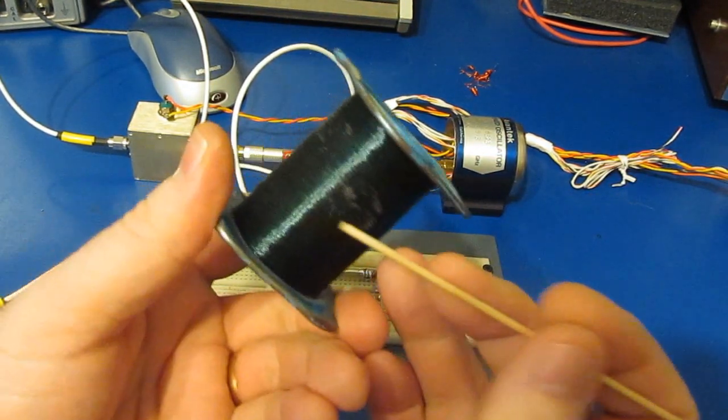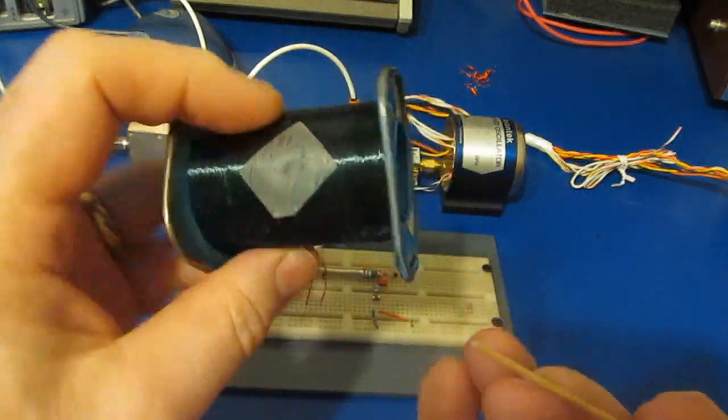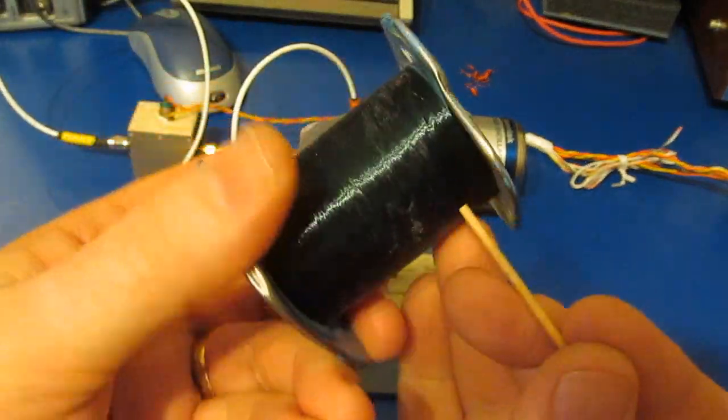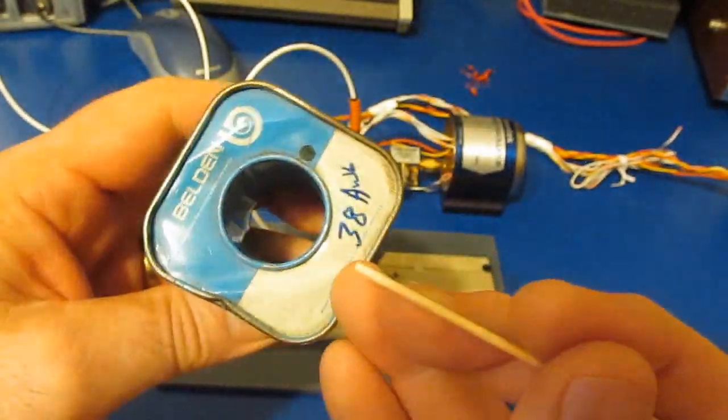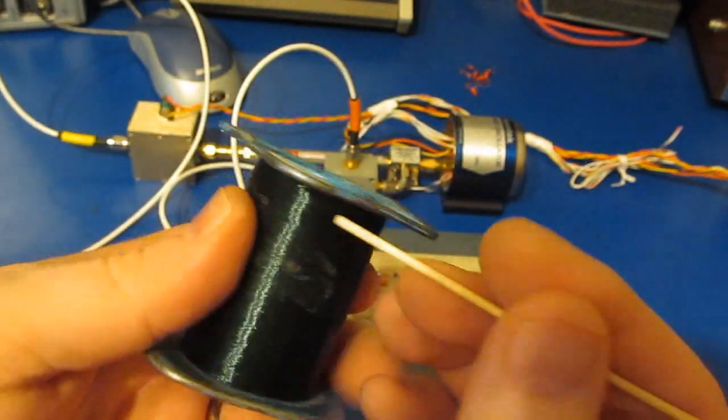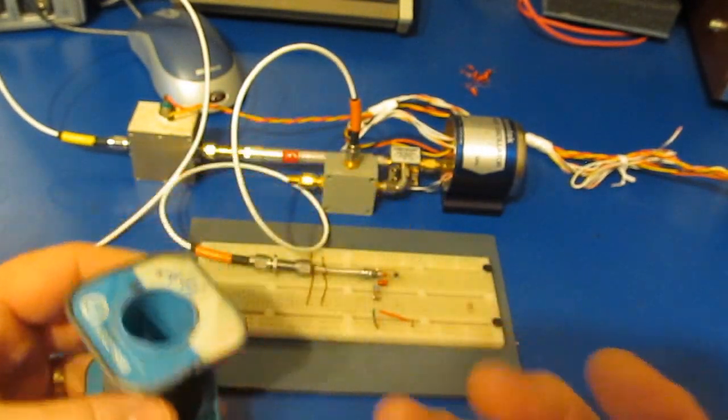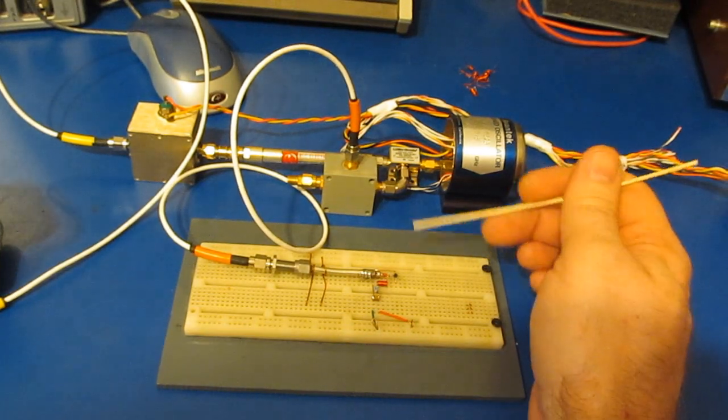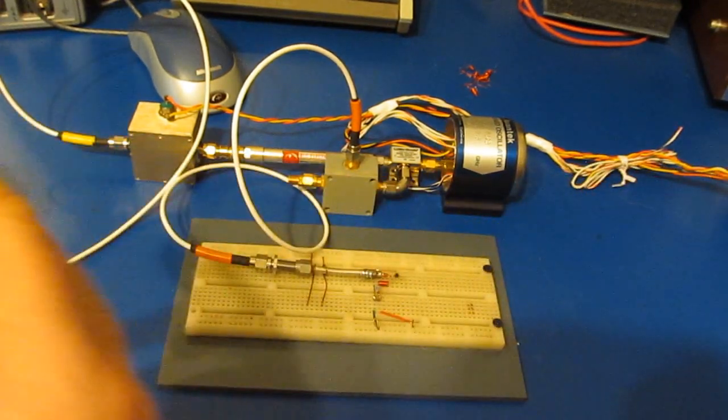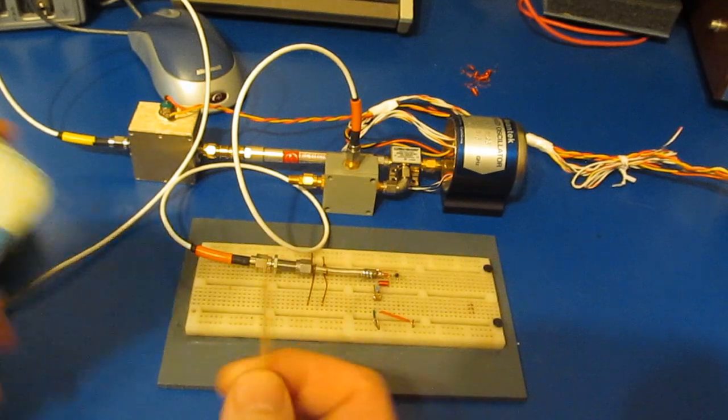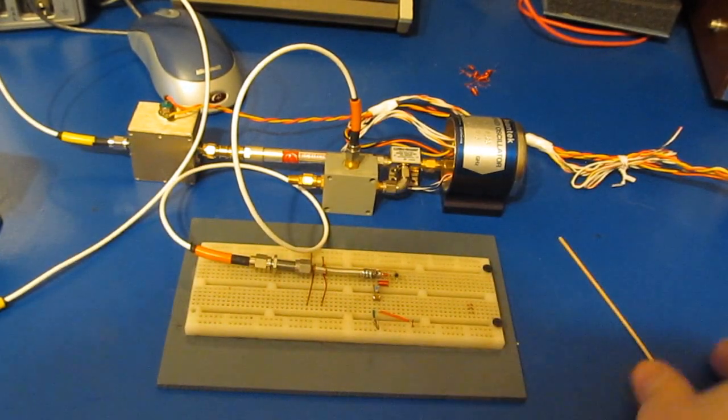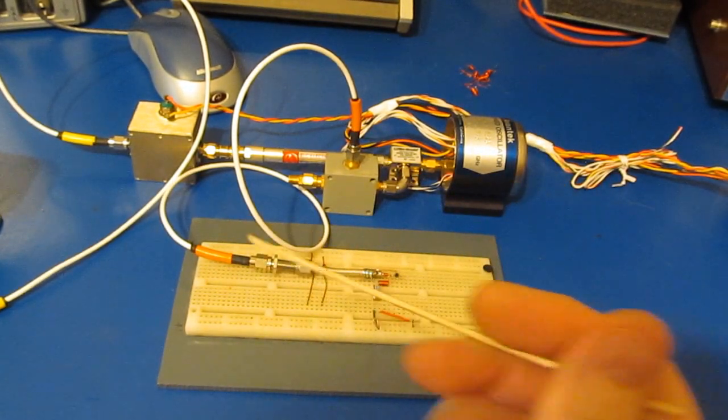I'm still using the same transistor, but I've changed to this wire made by Belden. It's a magnet wire, 38 gauge, a bit finer than before. I've also shaved off the transistor leads to remove some parasitics. Let me hook this up and show you it in operation.